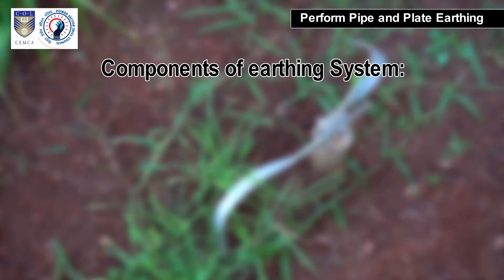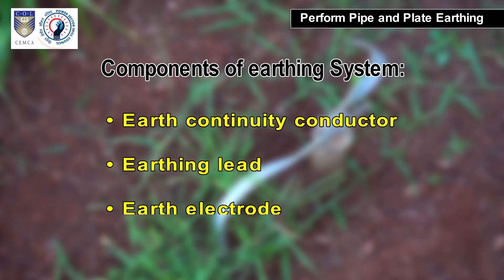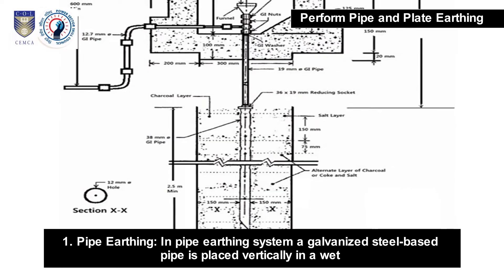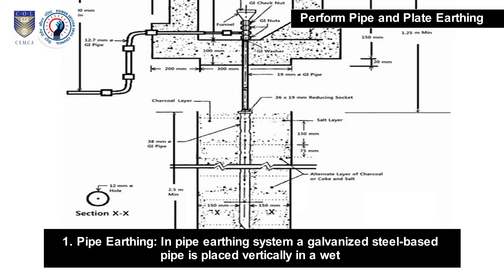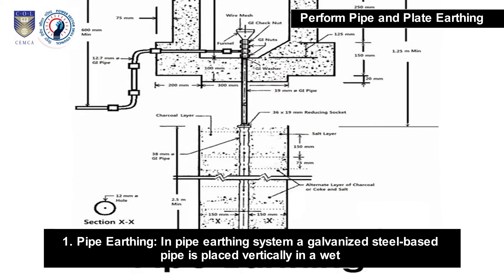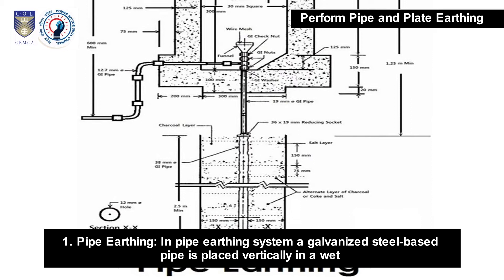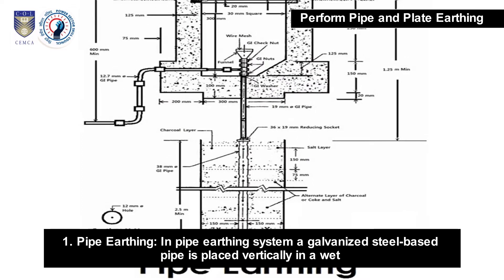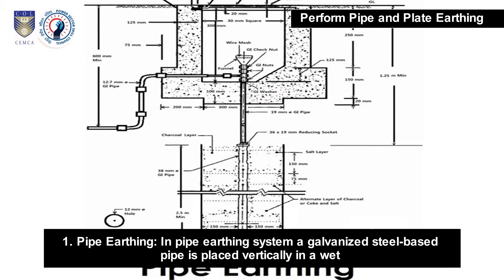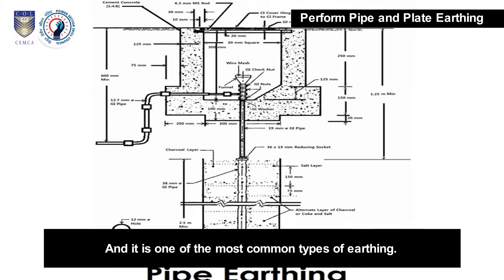Components of an earthing system include the earth continuity conductor, earthing lead, and earth electrode. Methods of earthing: First, pipe earthing — in this system, a galvanized steel pipe is placed vertically in wet ground, and it is one of the most common types of earthing.